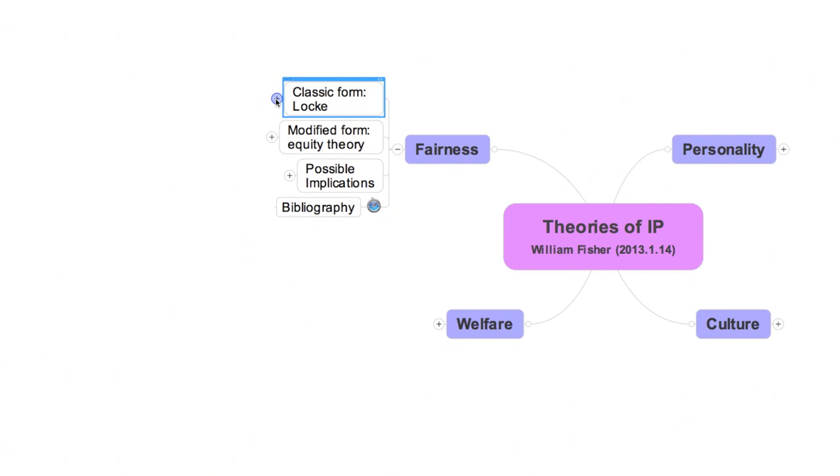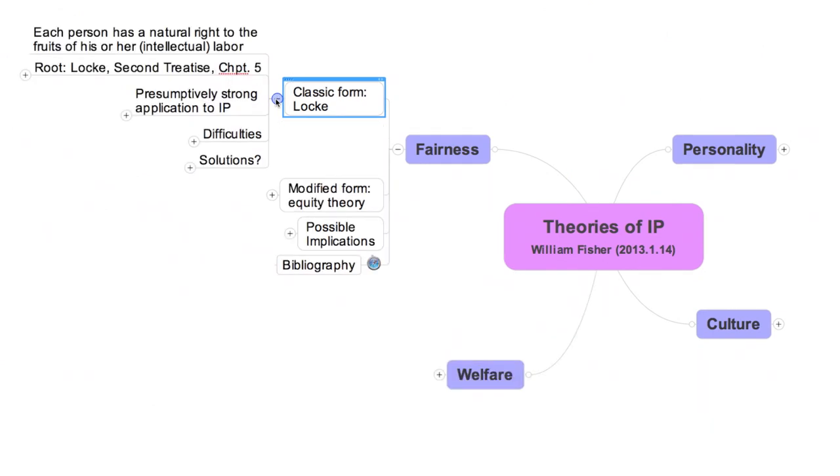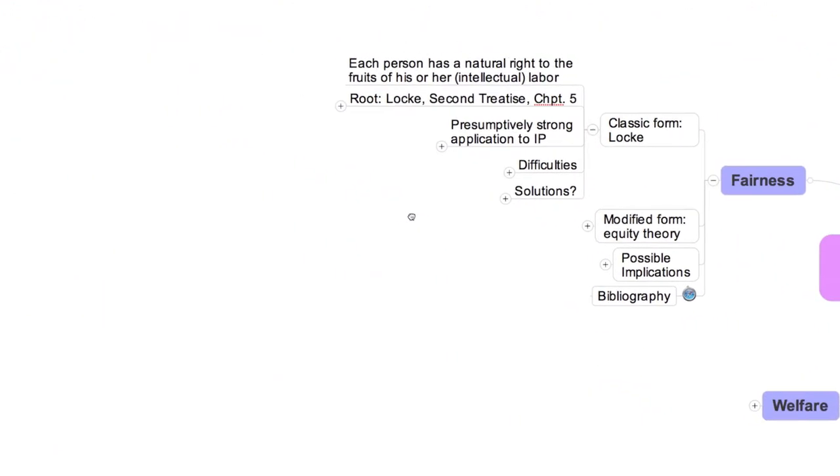I'll spend a few minutes now summarizing the main features of Locke's general theory of property rights. This argument is likely to be familiar to many of you, but not to all. Once we're done, we'll consider the application of Locke's argument to intellectual property and to copyrights in particular. Most of Locke's theory is distilled in Chapter 5 of his Second Treatise of Government. The heart of that chapter is a generative vignette, an evocative story.